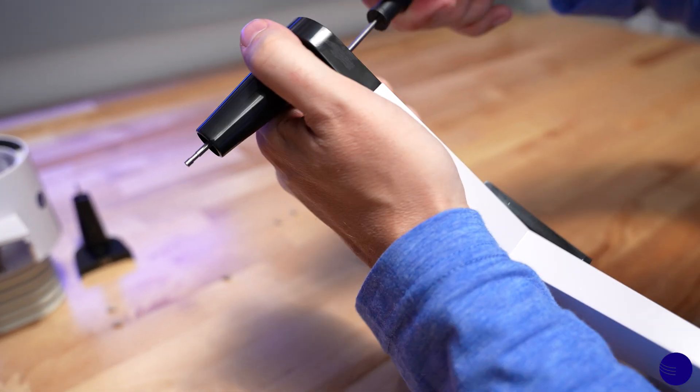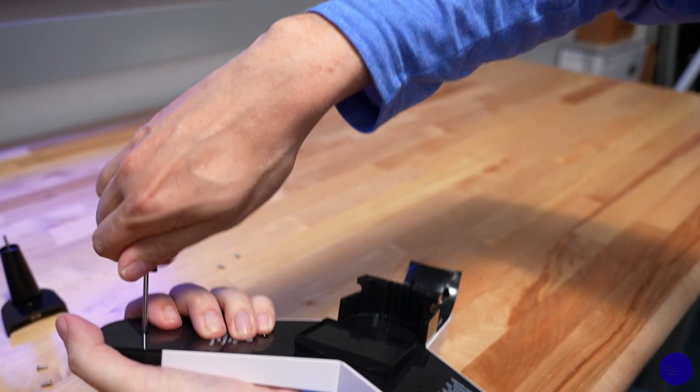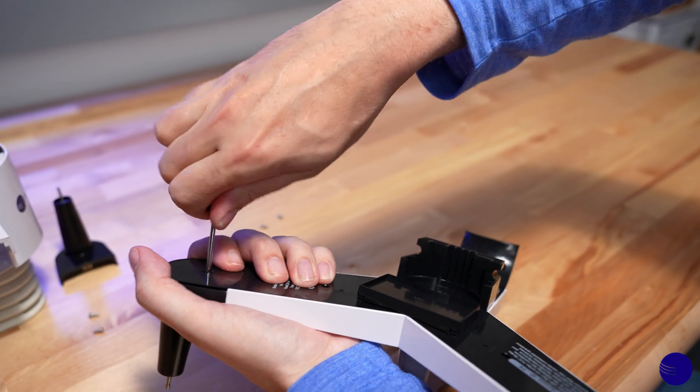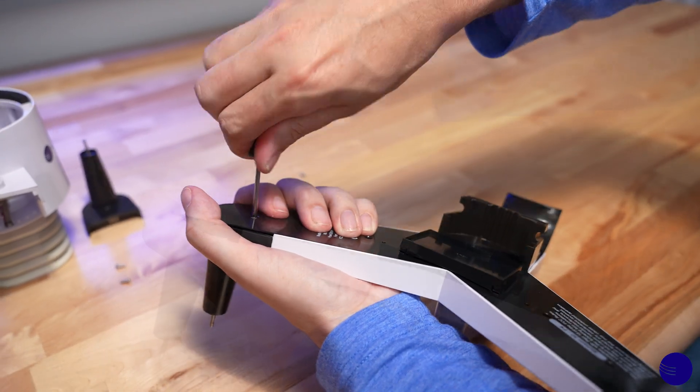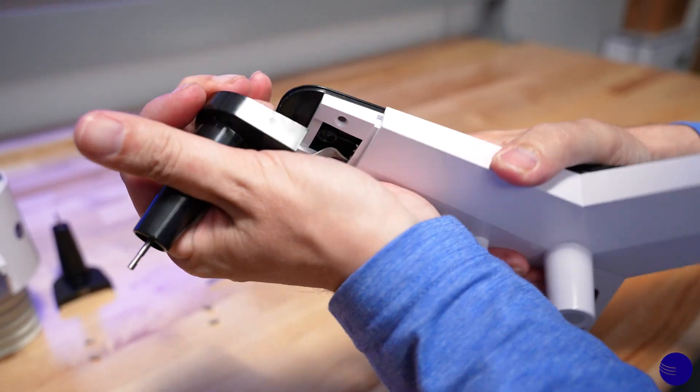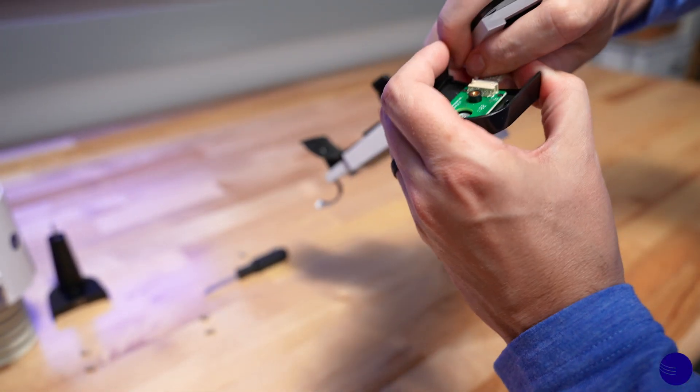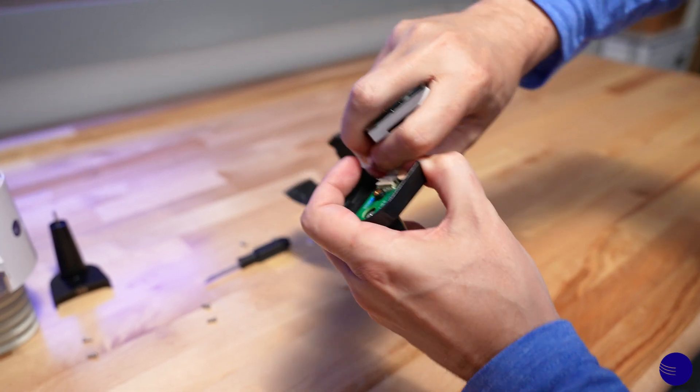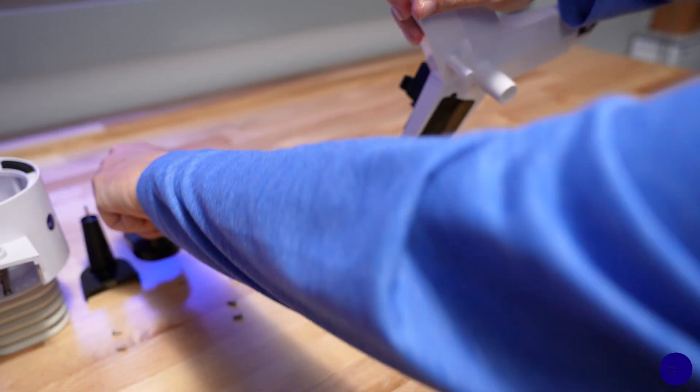We can set that to the side and then move on to our wind speed assembly. We'll remove this screw on the bottom and remove our assembly. Once again, we'll unplug our connector so we can set that aside.